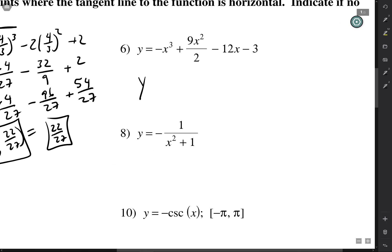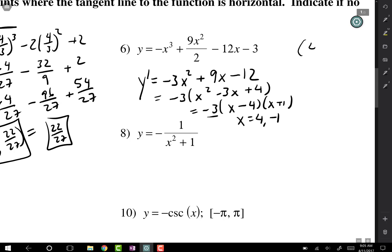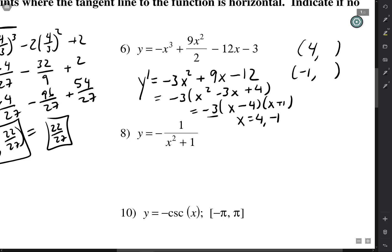We do it again: y prime equals negative 3x squared plus 18x minus 12, which we can write as 9x minus 12 simplified, then factor out negative 3 to get negative 3 times (x squared minus 3x plus 4), factoring further as negative 3 times (x minus 4)(x plus 1). So x equals 4 or x equals negative 1. Negative 3 will never equal zero, so you have (4, something) and (−1, something). You can plug those into the y equation to get the full ordered pairs.